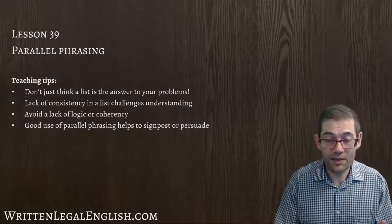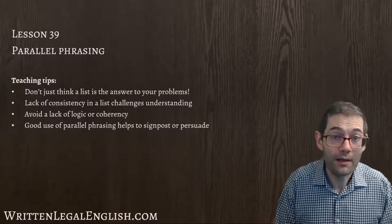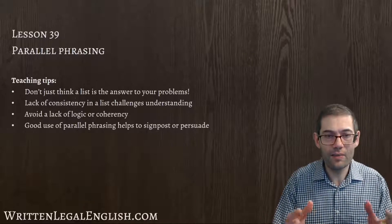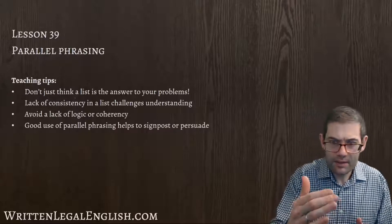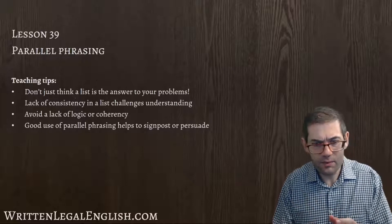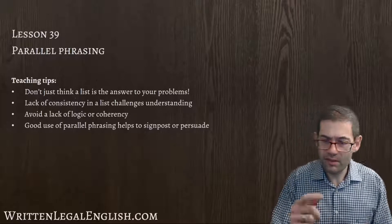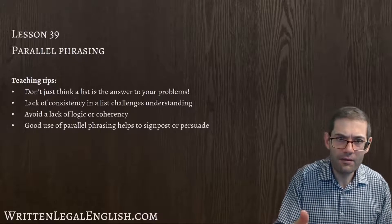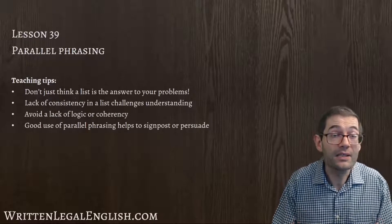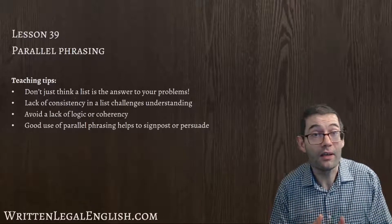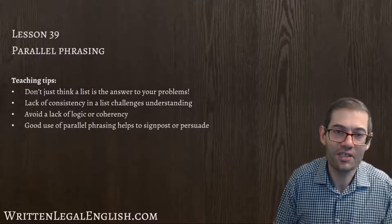I know that from personal experience as a proofreader and a copy editor. When I have a list that doesn't use parallel phrasing, it means I have to work out what's going on. How does that point relate to that point? That point's written in the past, that point's written in the future, this point has got a gerund, this point has got a noun — what's going on? The list doesn't make sense, and that means I have to do the work as a reader. And as we know, if a reader has to interpret the text, this is not a successful piece of writing.